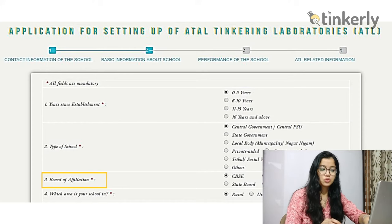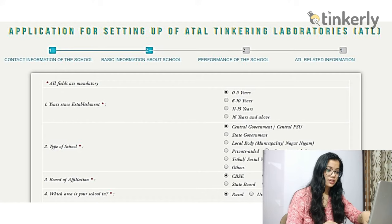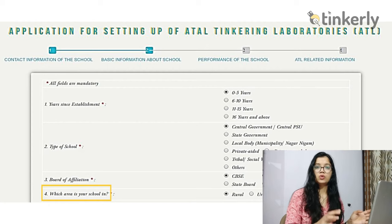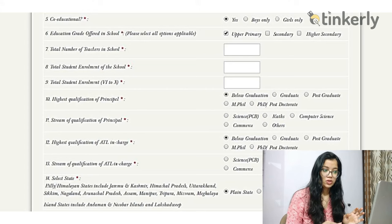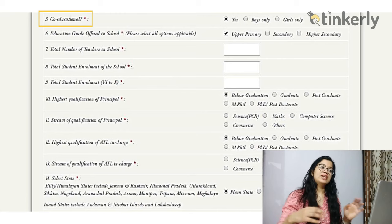The next question asks which area your school is in — rural or urban. After giving this information, more questions appear. The first is co-educational: you must state whether your school is co-educational, boys only, or girls only. Select the appropriate category.